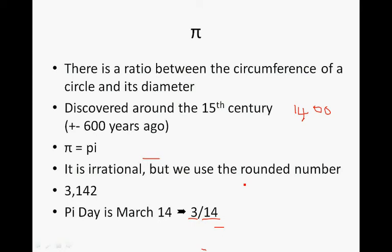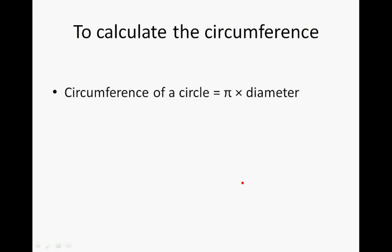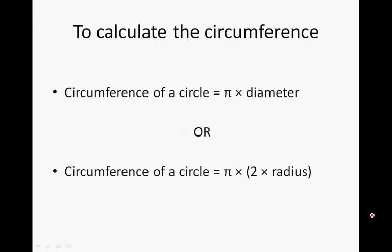To calculate the circumference, we take Pi, which we will use as 3.14, and times it with the diameter of the circle. Or we can say Pi times 2 times the radius. And remember that 2 times the radius is equal to the diameter. So this is not two different calculations. This is just using a different form of the diameter.